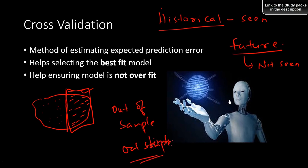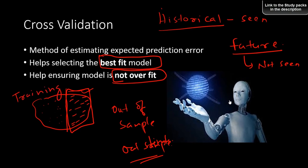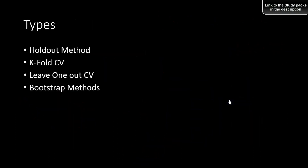Cross-validation helps in selecting the best fit model — the best model we choose has to be well validated. It also helps ensure that the model is not overfit, meaning the model performs very well on historical training data but doesn't perform well on the validation data. That is a typical case of overfitting, and to avoid all these things, we need to do cross-validation.